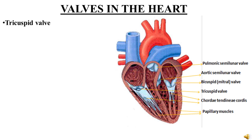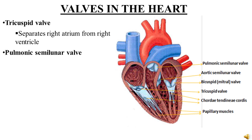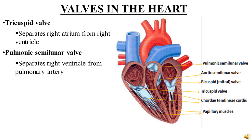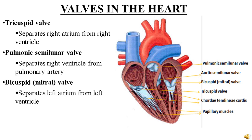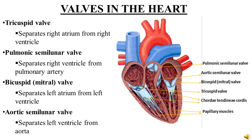There are four valves in the heart. First, the tricuspid valve, which separates the right atrium from the right ventricle. Second, the pulmonic semilunar valve, which separates the right ventricle from the pulmonary artery. Third, the bicuspid or mitral valve, which separates the left atrium from the left ventricle. Fourth, the aortic semilunar valve, which separates the left ventricle from the aorta. A diagram shows the locations of all four valves.